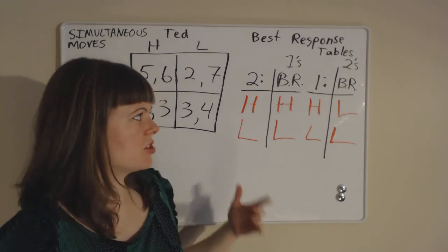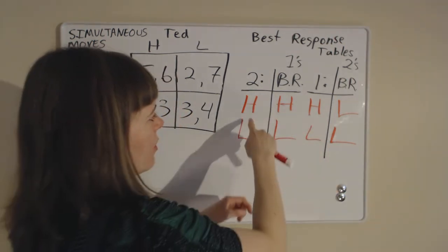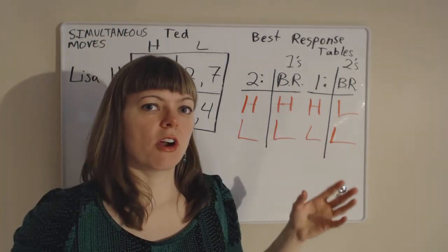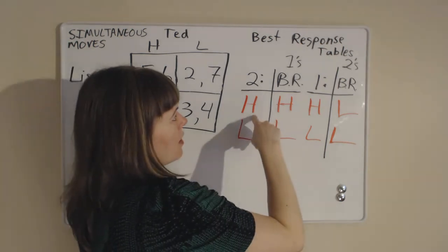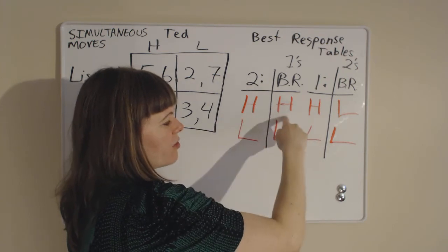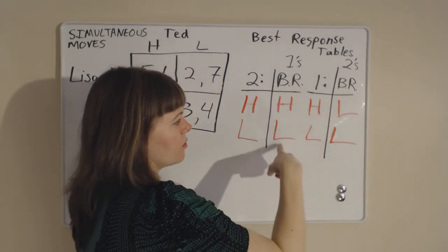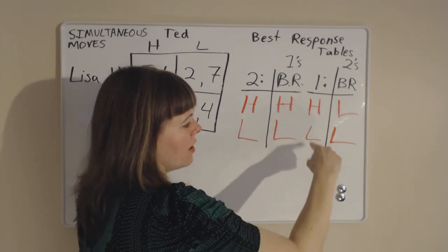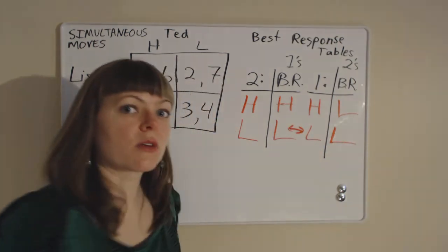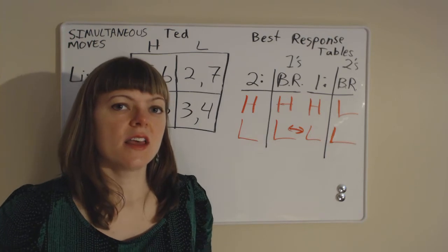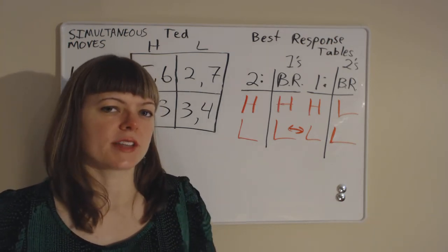In this simultaneous moves game, she doesn't know what he's going to do yet. So how do we find the Nash equilibrium? The Nash equilibrium is where we have a pair of strategies that match each other — where each player's best response is a best response to the other player's strategy. If Ted goes high, Lisa wants to go high; but if Lisa goes high, Ted wants to go low, so that's not a match. If Ted goes low, Lisa wants to go low; and if Lisa goes low, Ted wants to go low — these are best responses to each other, giving us our Nash equilibrium. The Nash equilibrium is a no-regret strategy: given what the other player ended up doing, you're happy with your choice and would not have changed it.